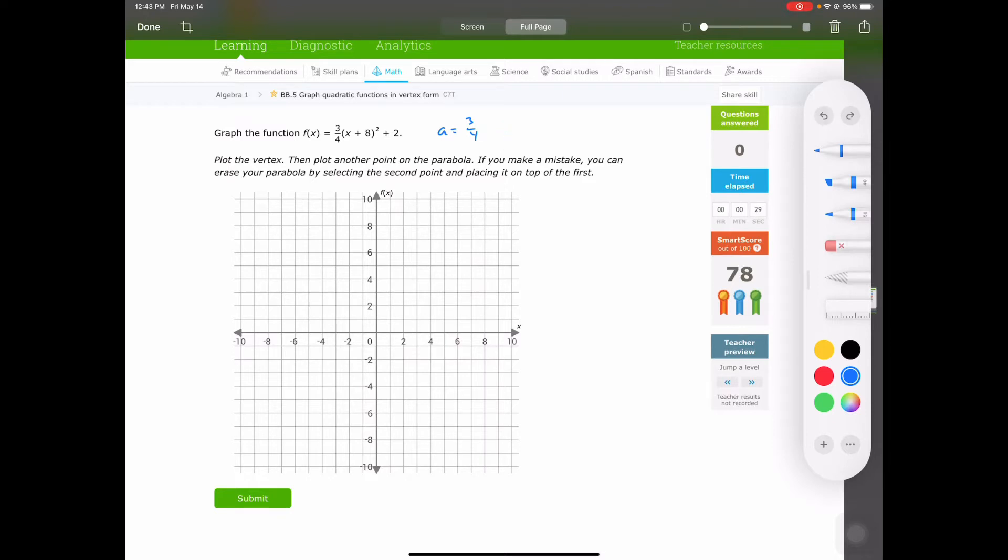We know our h and k is going to be negative 8, because remember it's going to be x minus h, so to get rid of the negative we need another negative to make it a positive, and our k is equal to 2. So let's go ahead and find our h is negative 8, negative 8 positive 2, we're right here.